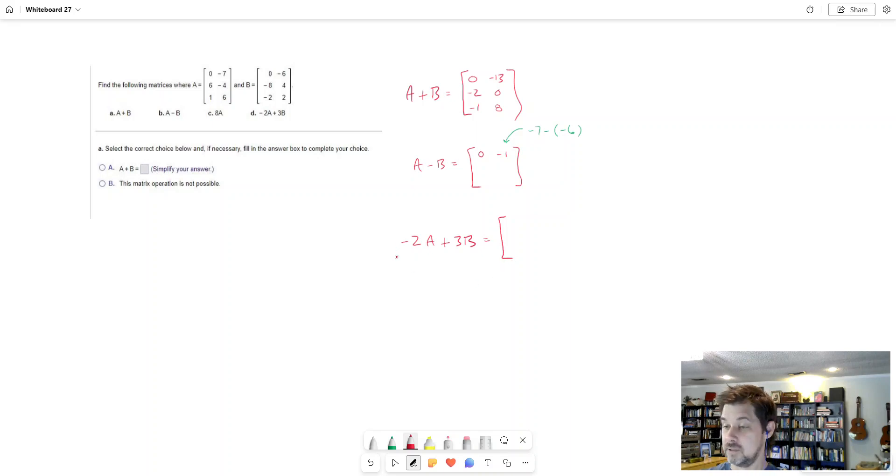Let's do that. Let's see. I'm going to take every single entry in matrix A and I'm going to multiply it by negative 2. I'm just doing that for now. So let's see. Negative 2 times 0, 0. Negative 2 times negative 7, 14. And see, I'm putting my answer in the same spot. I'm just multiplying the number times negative 2. Negative 2 times 6, negative 12. Negative 2 times negative 4, positive 8.